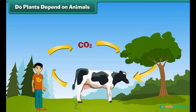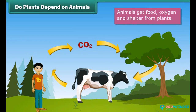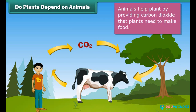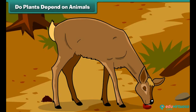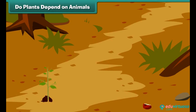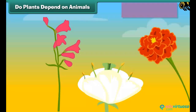Do plants depend on animals? Animals get food, oxygen and shelter from plants. Do they give anything to plants in return? Yes. Plants need carbon dioxide to produce their food. When animals breathe out, they release carbon dioxide and help the plants in making their food by the process of photosynthesis. Plants depend largely on animals to produce their seeds via seed dispersal. Do you know how?